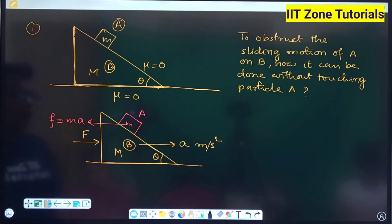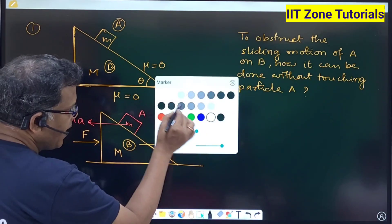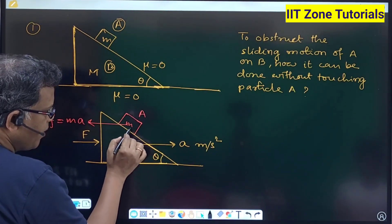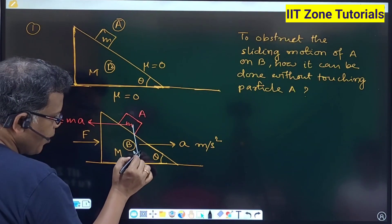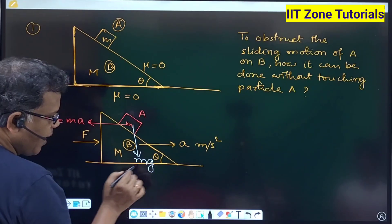But now how this pseudo force will be able to stop the sliding motion or sliding possibility of small m? To understand that if we do the FBD of the mass small m that is A, quite naturally its weight Mg that will act vertically downward.